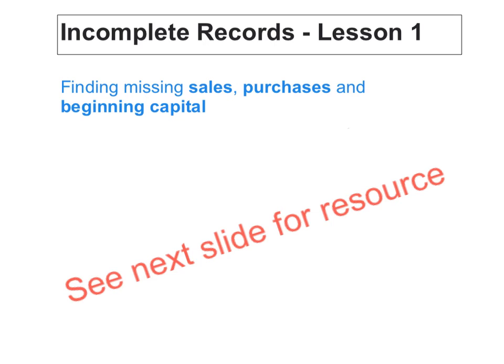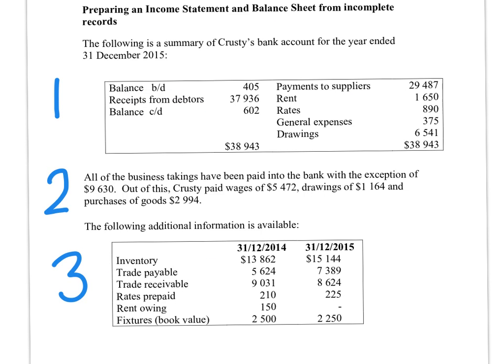Always look for information taken out of a cash book — this part of the resource, numbered one, is information taken from the cash book. On the left-hand side is money coming in, or receipts, and on the right-hand side is money going out, or payments.